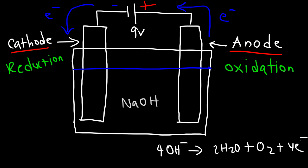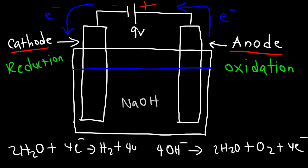Technically it's oxidized to oxygen gas, and water is a byproduct of that half-reaction. At the cathode, water is reduced to hydrogen — it picks up some electrons and turns into hydrogen gas, generating hydroxide ions. So at the anode you have the evolution of oxygen gas, and at the cathode hydrogen gas is produced.